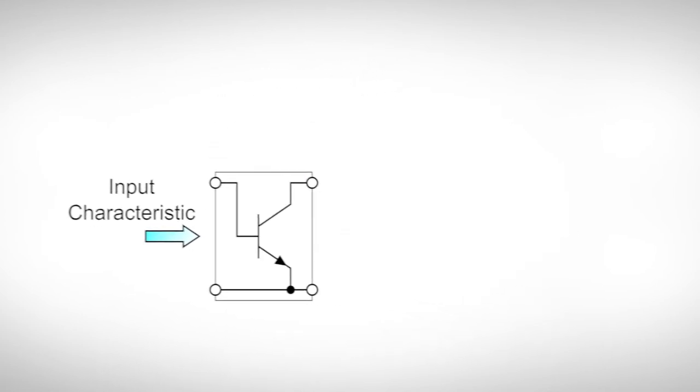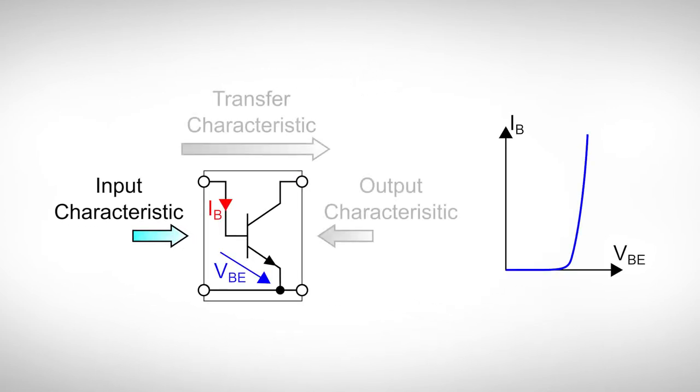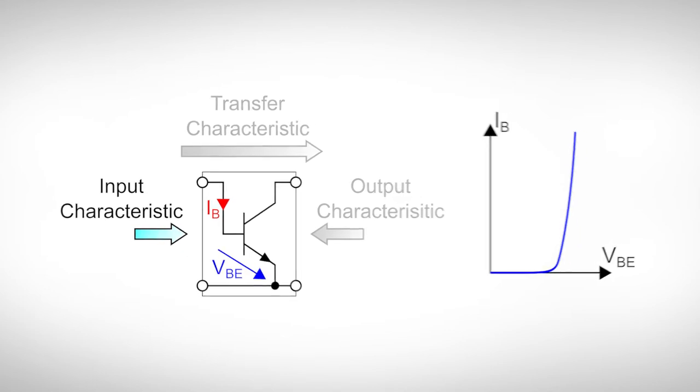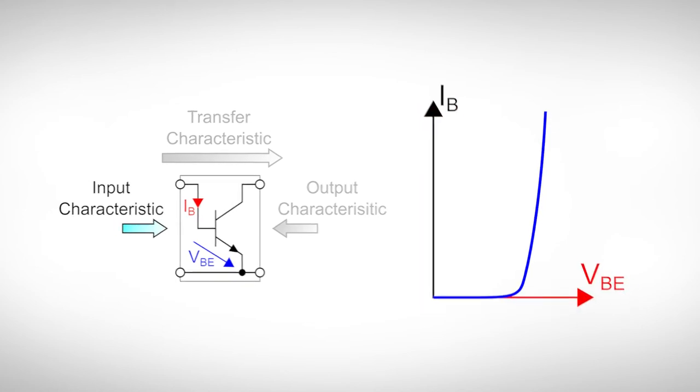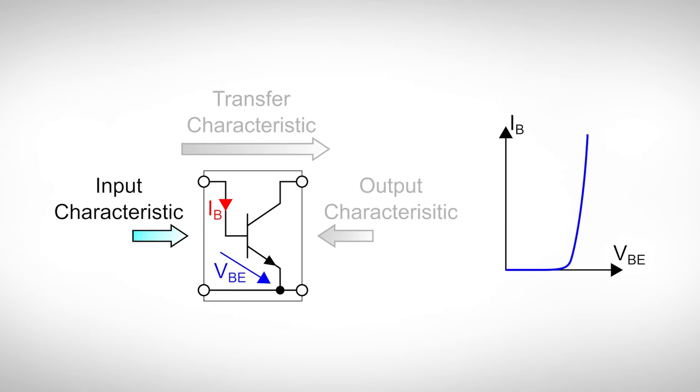The input characteristic tells us how the transistor reacts to changes between base and emitter. As base and emitter form a simple PN junction or a diode, unsurprisingly the input characteristic of a bipolar transistor looks like the current voltage relation of a diode.